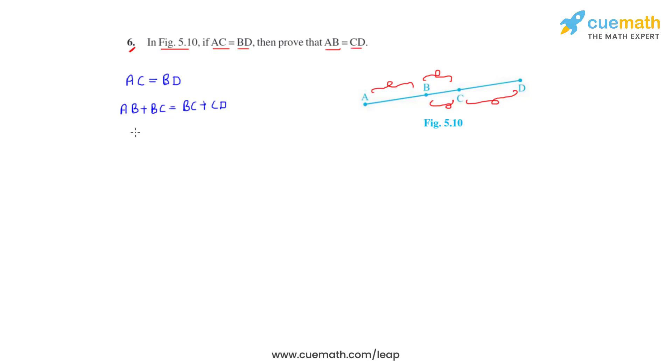Now what we can do is we can subtract BC from both sides. So let's do that. AB plus BC minus BC equals BC plus CD minus BC. So what we now get is AB is equal to CD.